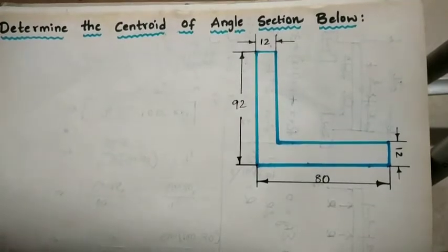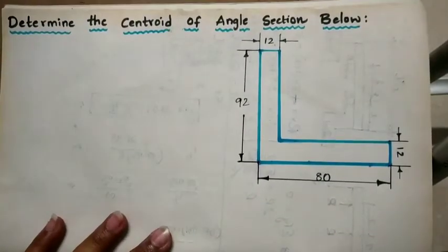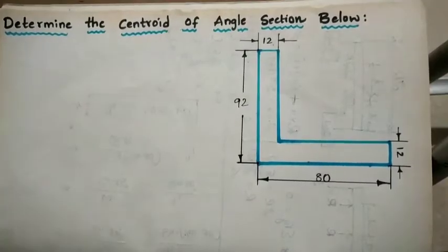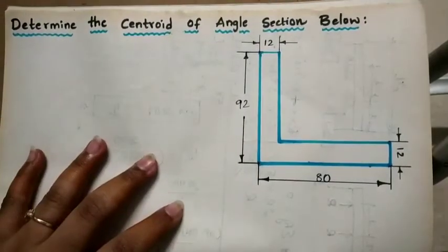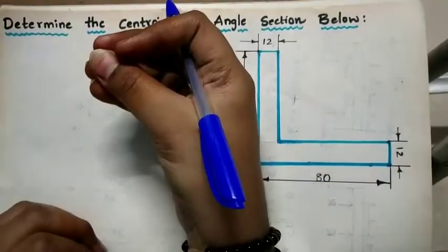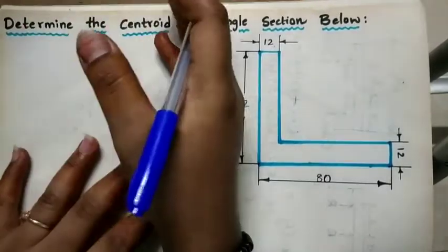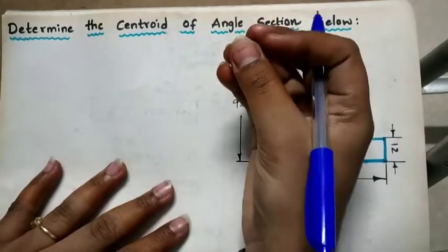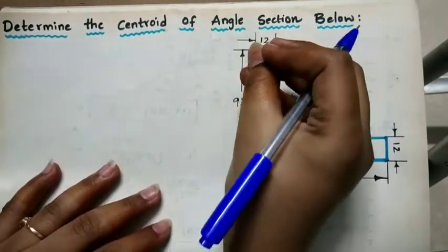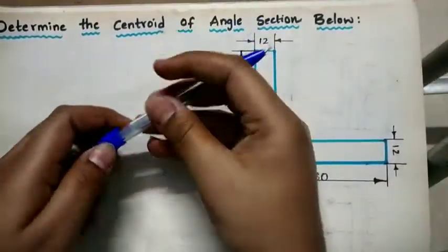So why do we calculate the centroid? We need to calculate centroid problems to understand where it is located — particularly to find where the center of gravity is for indefinite shapes. In the engineering field, we make several kinds of structures and frames, which is why we have different sections.